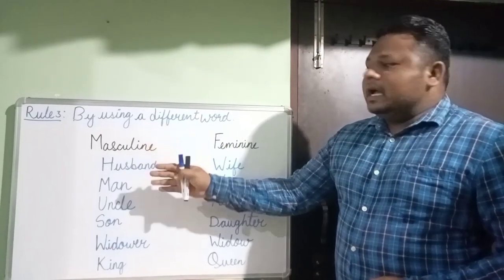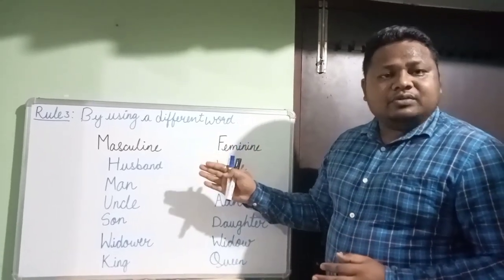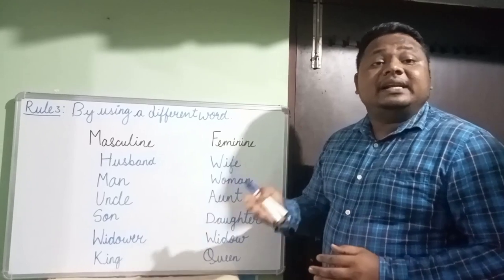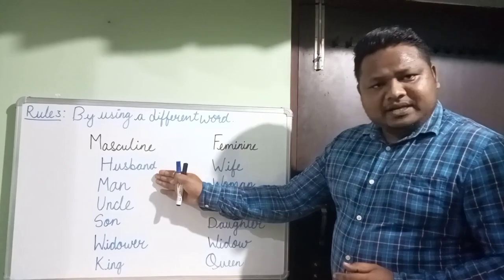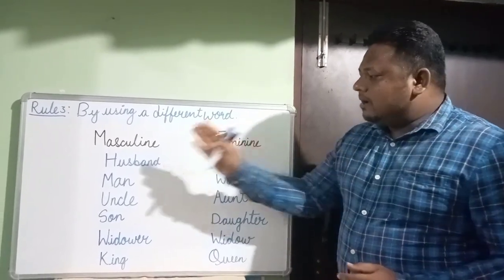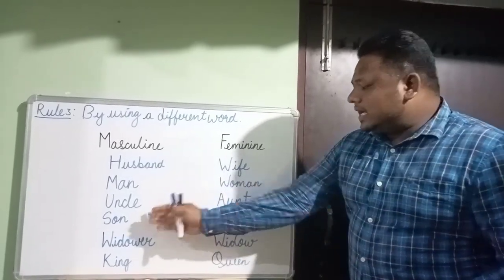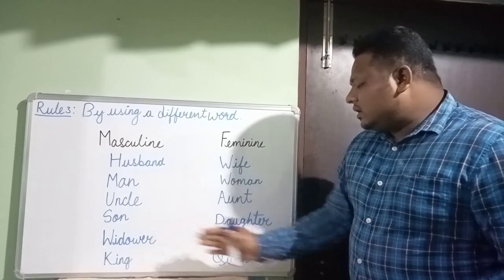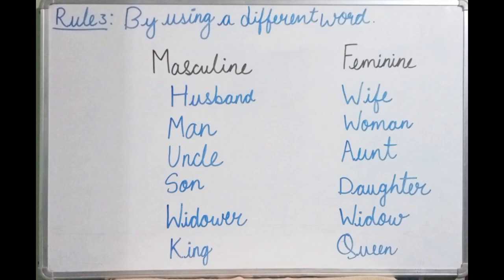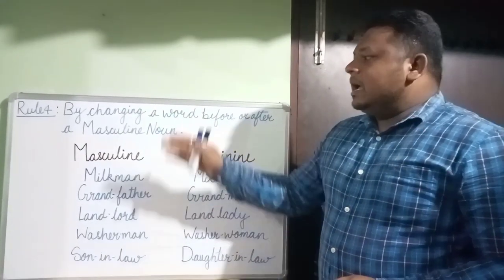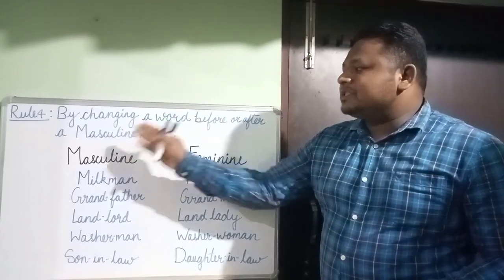Rule three: by using a completely different word. For some masculine nouns, the feminine noun is an entirely different word. Examples: husband → wife, man → woman, uncle → aunt, son → daughter, widow → widower, king → queen, and many more.